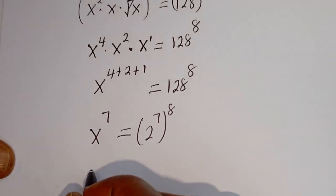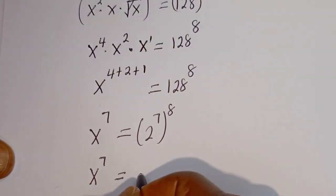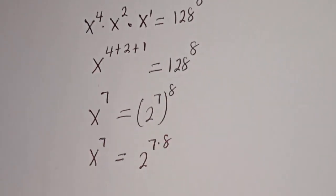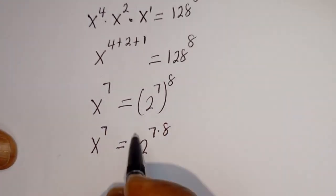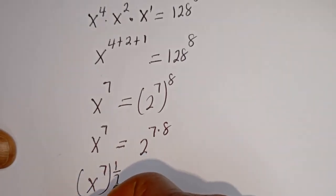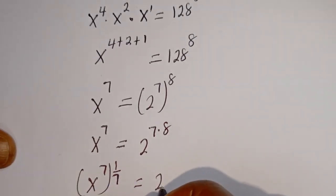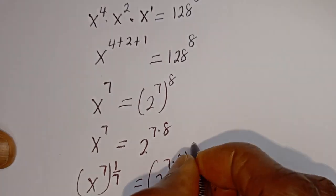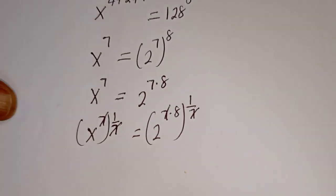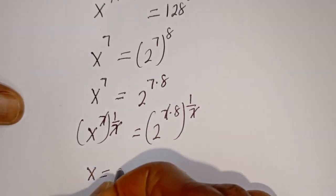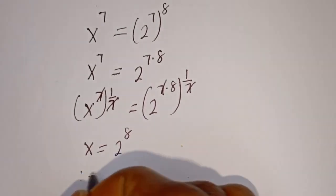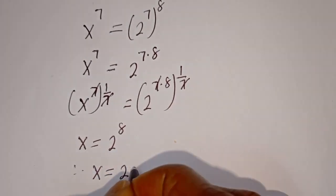We have s to the power of 7 equals 2 to the power of 7 times 8. Now we multiply the exponent of both sides by 1 over 7: s to the power of 7 times 1/7 equals 2 to the power of 7 times 8 times 1/7. This cancels, giving s equals 2 to the power of 8, and therefore s is equal to 256.